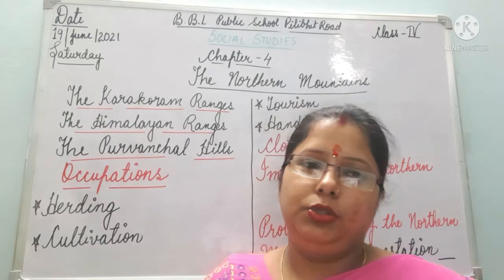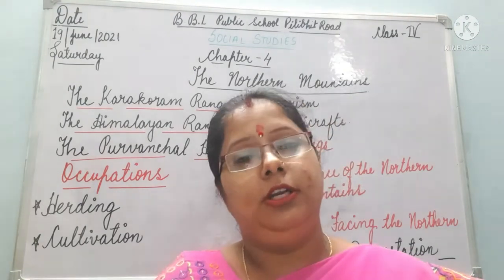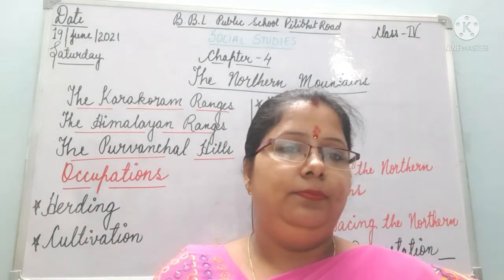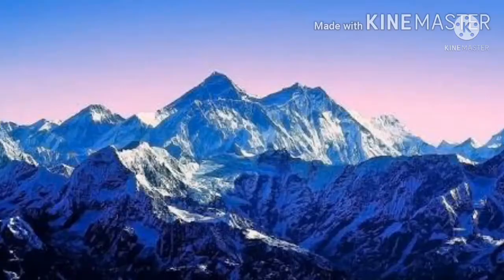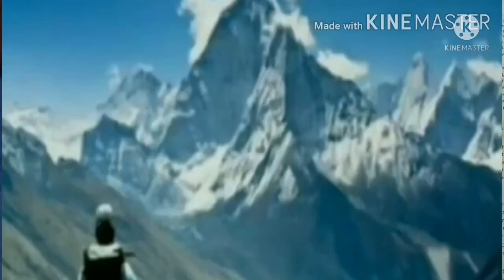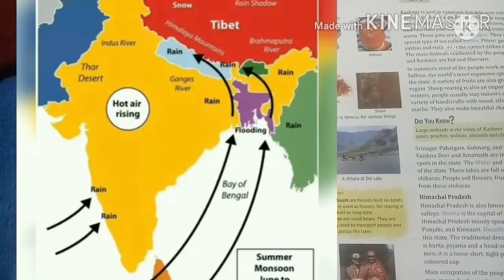Now we move to the importance of the northern mountains. The Himalayas form a natural barrier protecting India from enemies. They also act as a barrier and stop the monsoon winds from going outside India — the monsoon winds hit the Himalayas and turn back, bringing heavy rainfall to the northern plains. They also protect us from the icy cold winds that blow in from Central Asia.